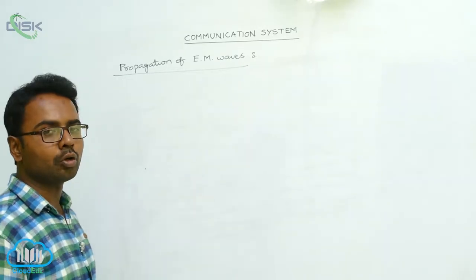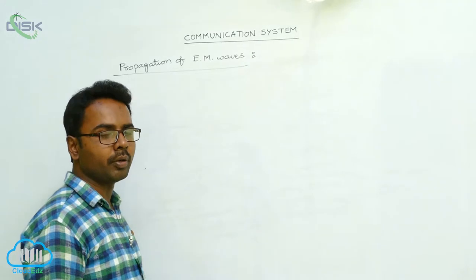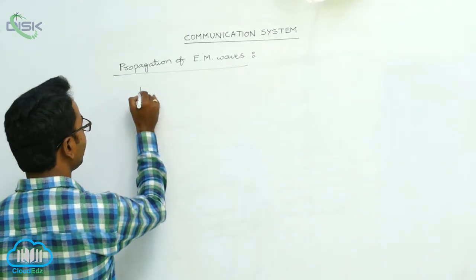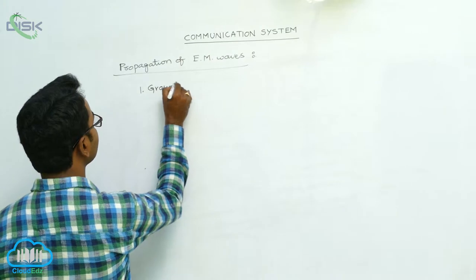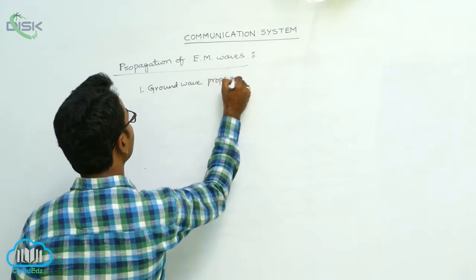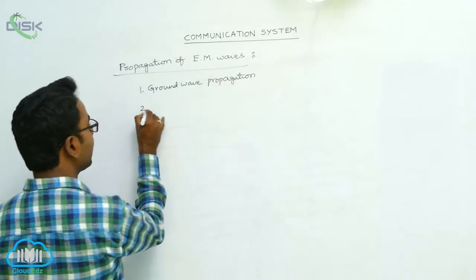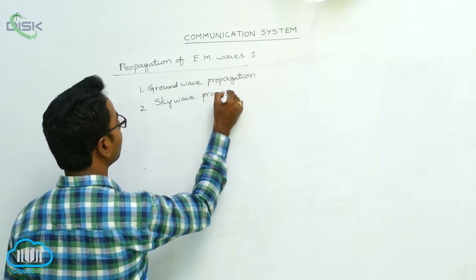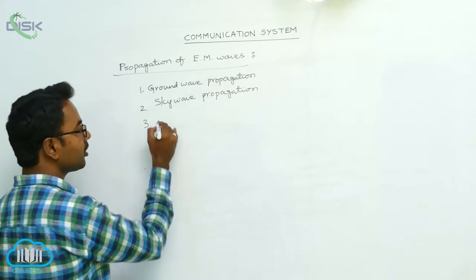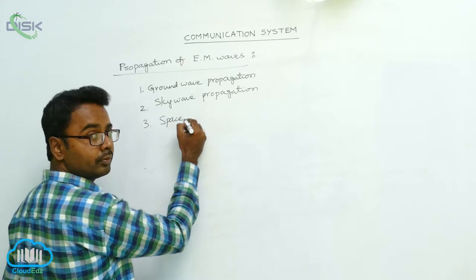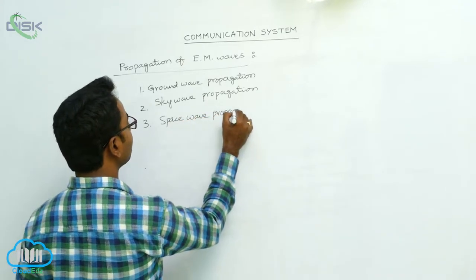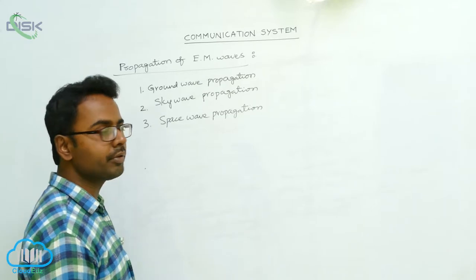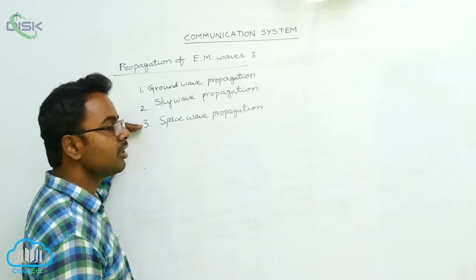Here we study the propagation of electromagnetic waves. Electromagnetic waves can be propagated in three different ways. The three different types of propagation are: first, ground wave propagation; second, sky wave propagation; and third, space wave propagation.